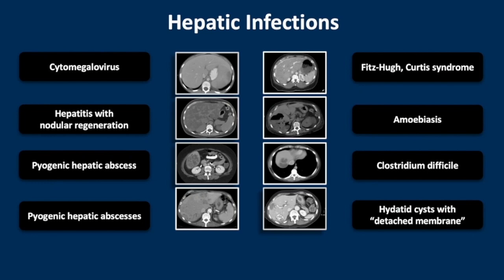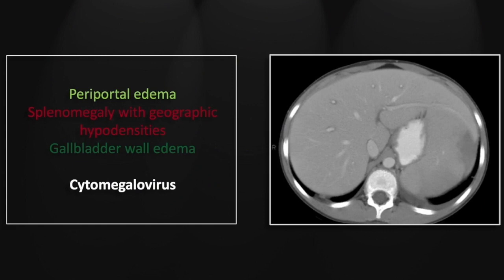Our topic for this session will be hepatic infections. Our first case is cytomegalovirus infection in a child. This is a great example of periportal edema — you see the circumferential hypodensity surrounding the portal venous branches. There is marked splenomegaly, and as is frequently the case, the spleen becomes friable and outgrows its own blood supply, resulting in multifocal infarcts, one of which you see here.